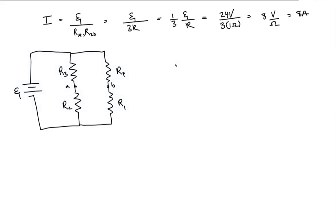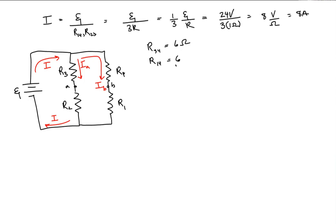We now know the current output by I. We also know the current going down branch A and branch B, because the equivalent resistance of branch A is the same as the equivalent resistance of branch B. For branch A, the equivalent resistance is 6 ohms, and for branch B, the equivalent resistance is also 6 ohms. Since the resistance of each branch is the same, and each branch has the same potential difference,